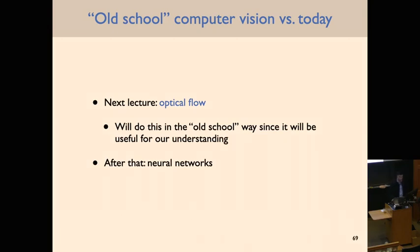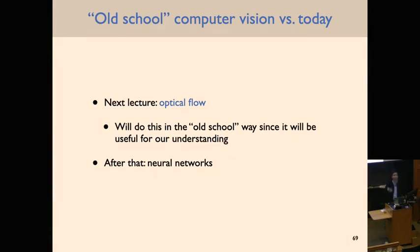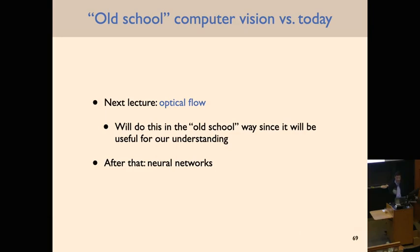In two lectures we get to deep learning, but it's useful to spend some time trying to do things by hand first — to appreciate the challenges and build intuition about vision. In the next lecture we'll talk about optical flow: figuring out where things appear to be moving in the image. We'll do this the old-school way — thinking hard about the problem and deriving an algorithm. Then after that, we'll think about how to use neural networks to learn these computations automatically from data.